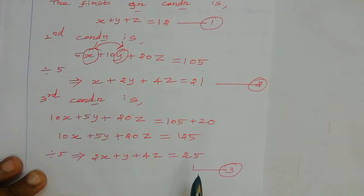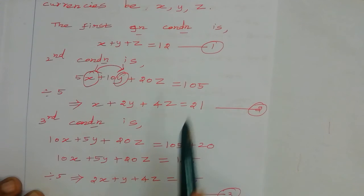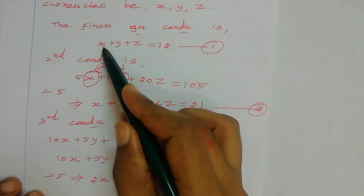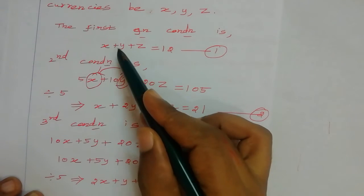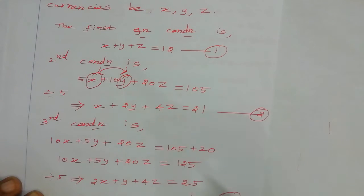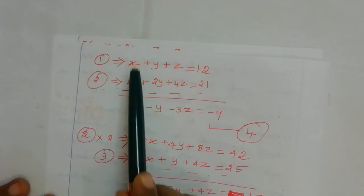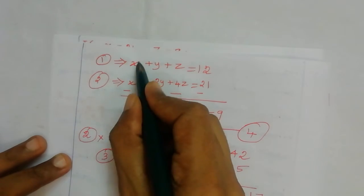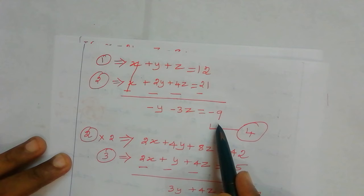Now we find the values of x, y, z using the elimination method. First, we eliminate one variable from any two equations. Here, the coefficient of x is 1 in both equation 1 and equation 2, so we can subtract. Subtracting equation 1 from equation 2: x minus x cancels, y minus 2y equals minus y, z minus 4z equals minus 3z, and 12 minus 21 equals minus 9. This is equation number four: minus y minus 3z equals minus 9.